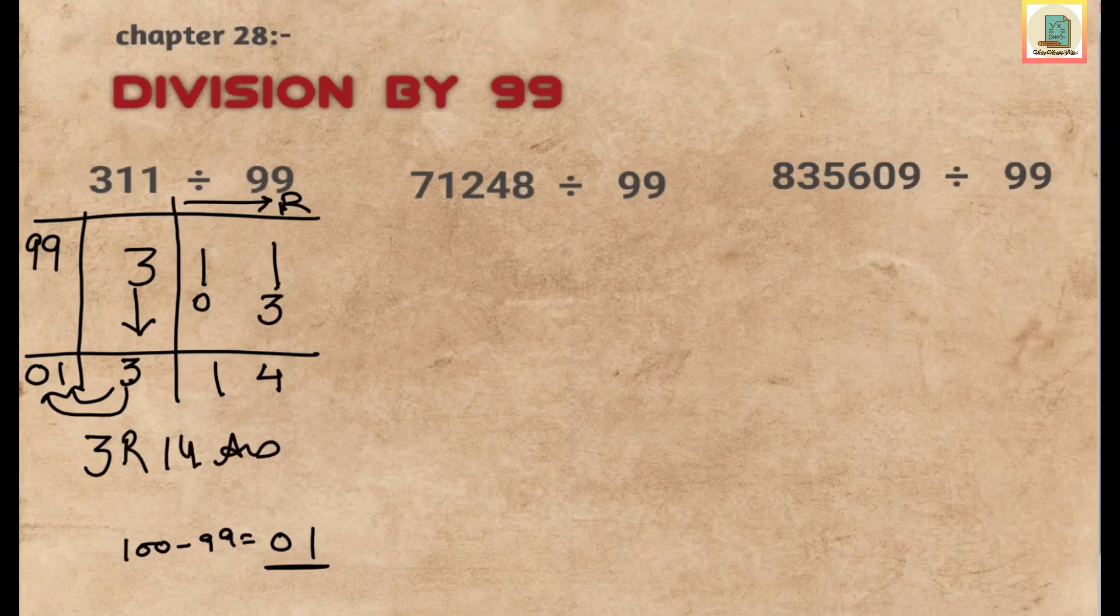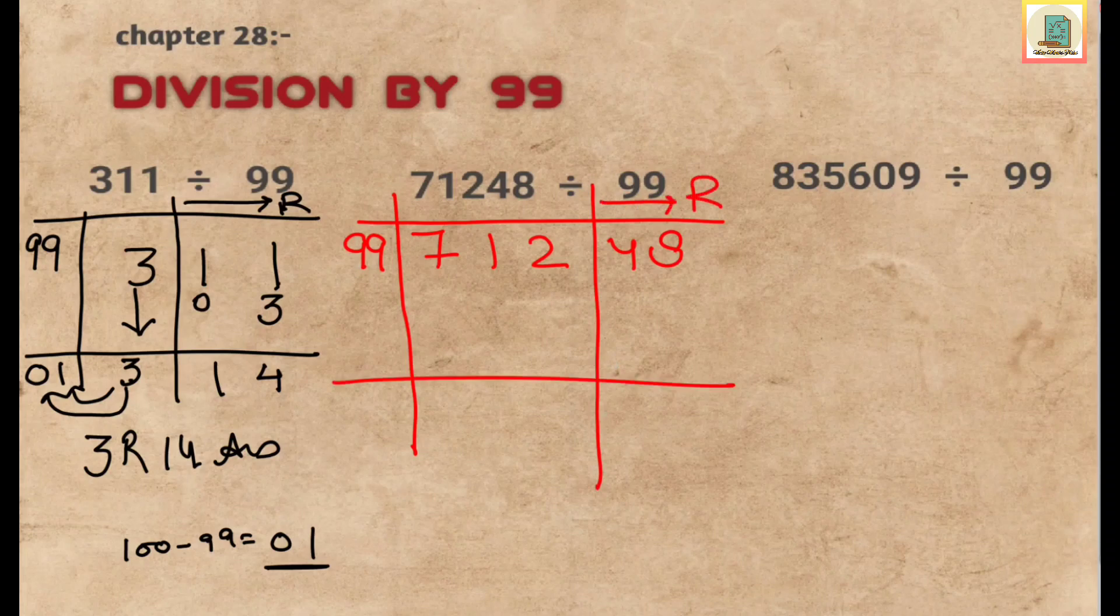Now let's take another example: 71248. We have to divide by 99. Make a format. Here we'll write divisor as 99. Since divisor has two digits, we will leave two digits from the right and put a partition. This part will be the remainder part. Now we'll take the complement of 99 that is 01.